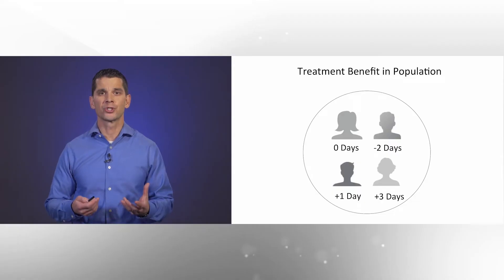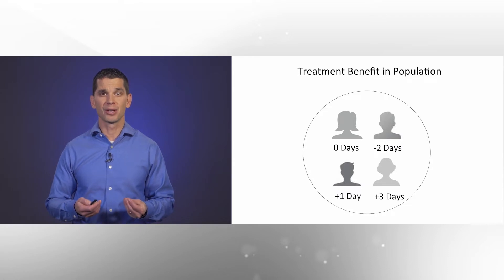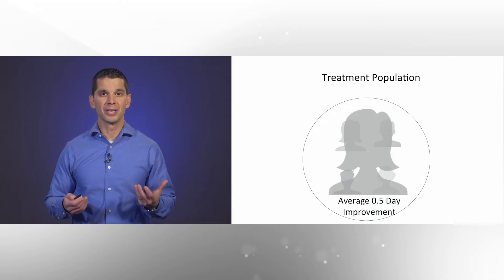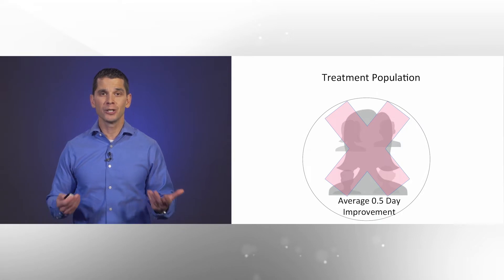What we typically do in clinical trials is we lump all these patients together into one population and calculate an average treatment effect across all these different types of patients, no matter what virus they actually have. In this particular case, with equal prevalences amongst these different subgroups, it would correspond to an average one-half day improvement. That's not a very big effect, so we're very unlikely to show any benefit and we're likely to conclude that this therapy is just not very effective.